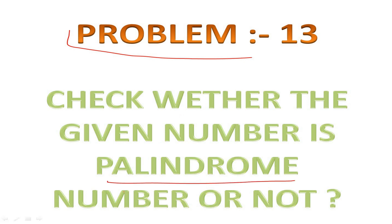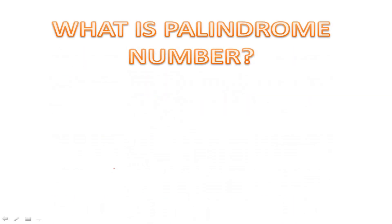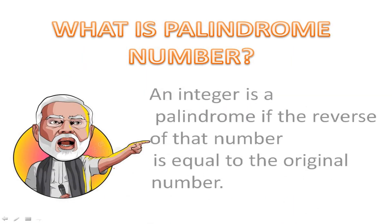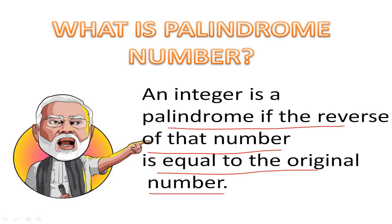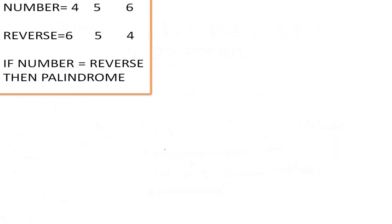First of all, what is a palindrome number? According to the definition, an integer is a palindrome number if the reverse of the given number is equal to the original number. If the reverse is equal to the number, then it is a palindrome; otherwise it is not a palindrome.